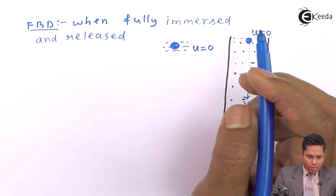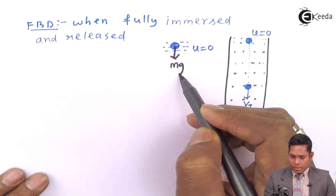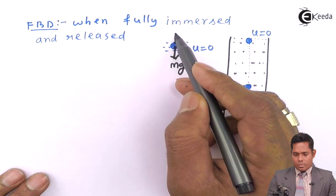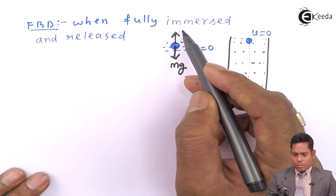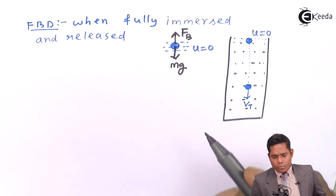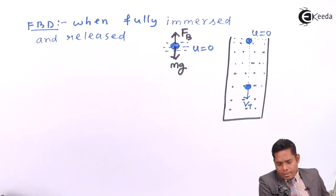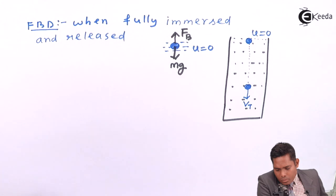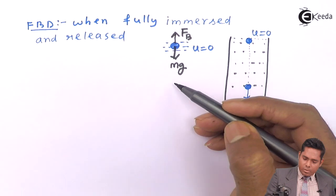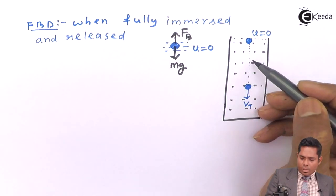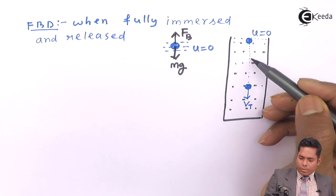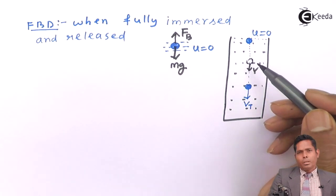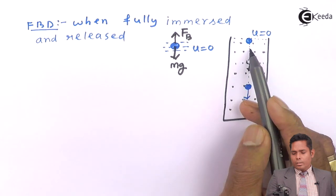At any intermediate point, the body has some velocity V. When there is velocity, a viscous force acts on the object while moving through the fluid. As we have discussed, the viscous force depends on the velocity of the object. As the velocity keeps increasing from the release point to where terminal velocity is attained, the viscous force also keeps increasing.